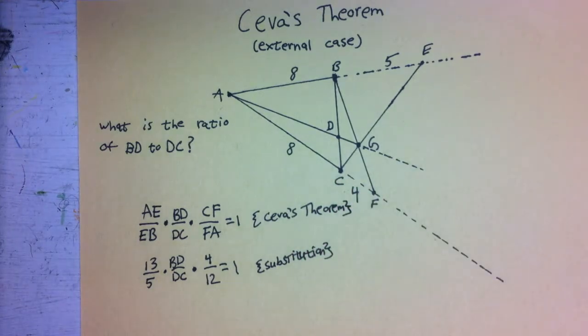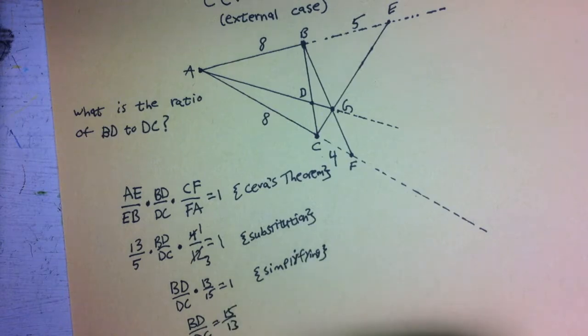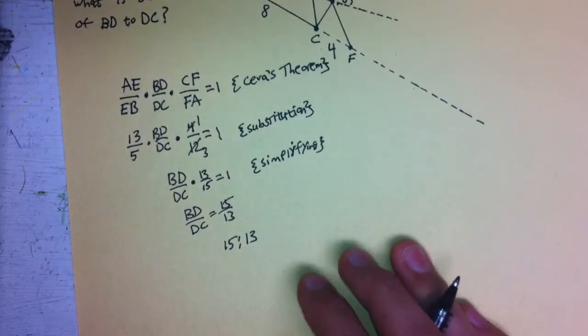So now, at this point, we're simply going to solve for BD, and therefore, BD to DC is equal to 15 over 13, and therefore, the ratio from BD to DC is 15 thirteenths.